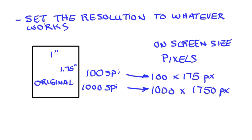Alright, so when we are scanning for on-screen, we simply set the resolution to what works. You know, we have to look at the size of the original, we have to see where we're going. Some scanning software, when you set the resolution and you have your scan area selected, you'll actually see the size in pixels that it's going to end up being. And you can then adjust before you actually do the scan to see what that size is going to end up being.